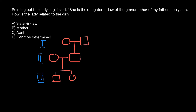Now let's follow the logic of this problem. A girl is pointing to a lady and saying she is a daughter-in-law. Only one lady here can be a daughter-in-law. This lady can be the daughter-in-law of this couple, because both the mother and father of a son can call their son's wife daughter-in-law. So we are talking about this person — she is a daughter-in-law of the grandmother of my father's only son.